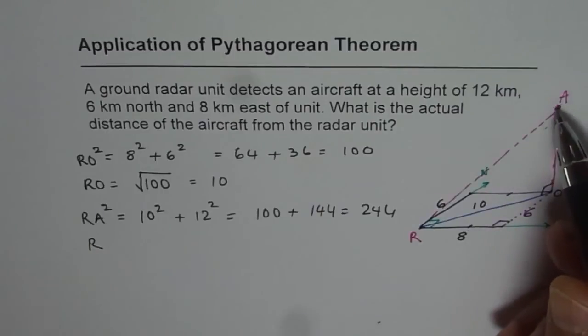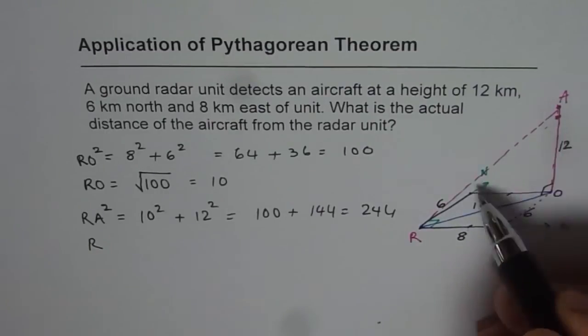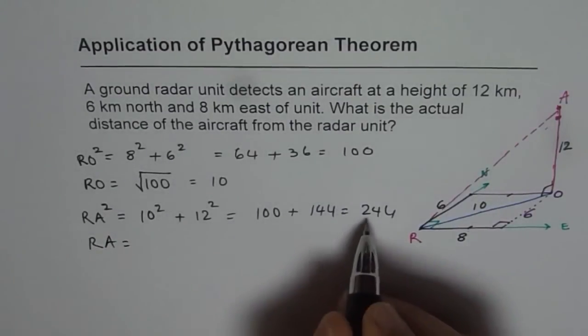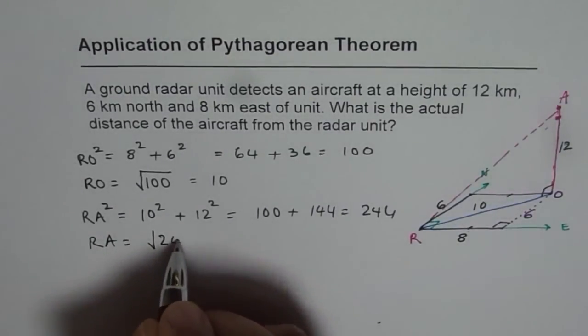So the height is 12 and this horizontal distance to the base is 10. Therefore, the distance from radar to the aircraft should be the hypotenuse of this big triangle.